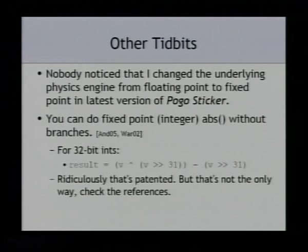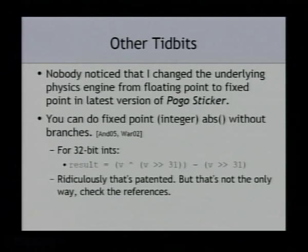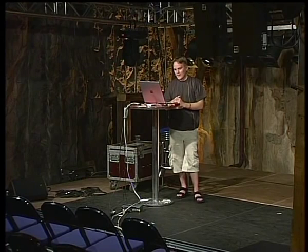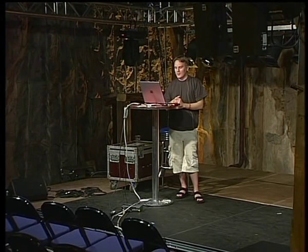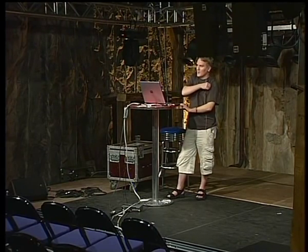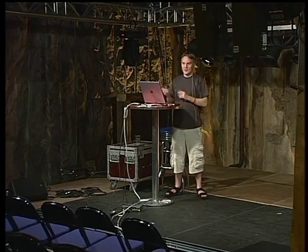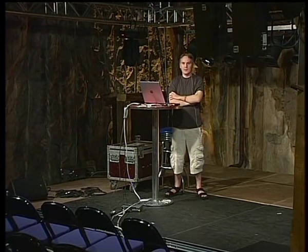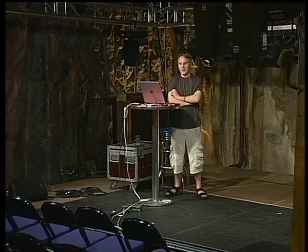Some other tidbits. My game POGO sticker from last year's Assembly game development competition had its physics switched from floating point to fixed point, and nobody noticed any difference — proving you can make them quite equivalent with some effort. There's a nice trick for computing fixed point absolute value without branching, avoiding any if statement. The code shown here is quite simple, but actually that particular implementation is patented. There are slight variations in the references that are not patented, and note that not all countries recognize those patents — probably valid in the US but not here.